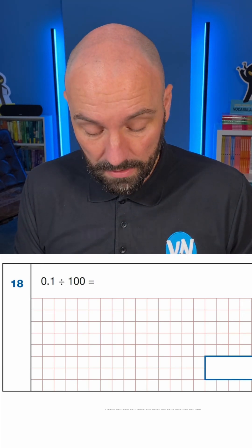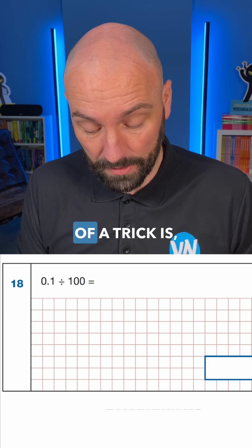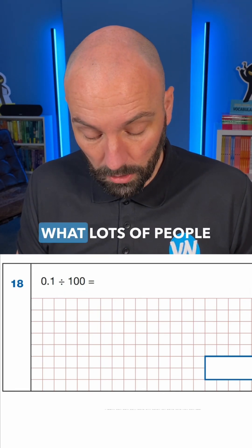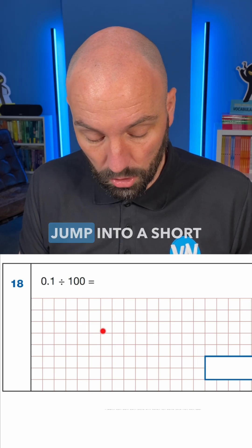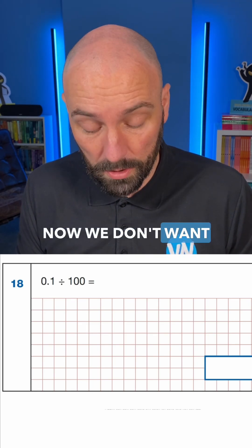So with this question the trick is, or a little bit of a trick is, with divided by 100 what lots of people or children will do is they'll jump into a short division. Now we don't want to do that.